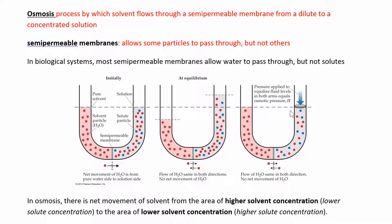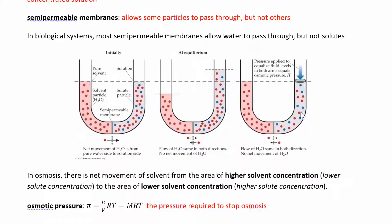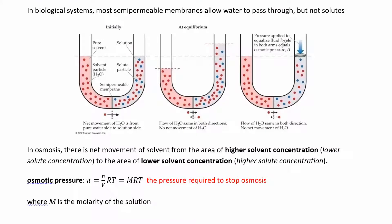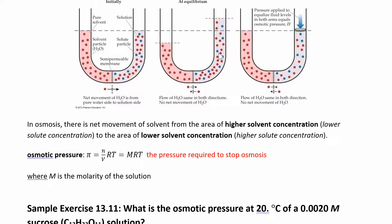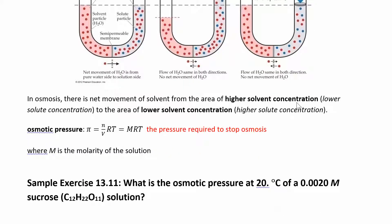Osmotic pressure is how much pressure you have to apply to prevent the flow of the solvent. It's the pressure applied to equalize the fluid levels, related to this flow of solvent from higher solvent concentration (lower solute) to lower solvent concentration (higher solute).